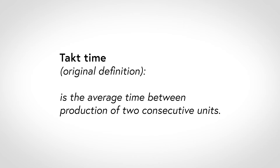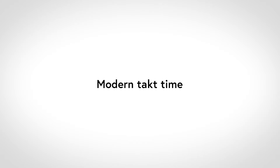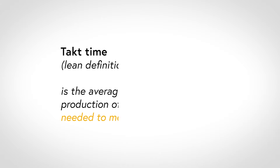The result was a finished plane every nine hours, with production numbers as high as 60 planes per month. So the original definition of Takt time is the average time between production of two consecutive units. But note that the modern-day understanding of Takt time differs a bit. Today we relate Takt time more to the pace of market demand. So the new definition is: Takt time is the average time between production of two consecutive units needed to meet market demand.